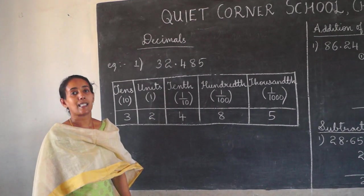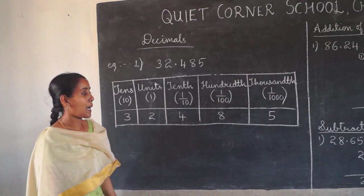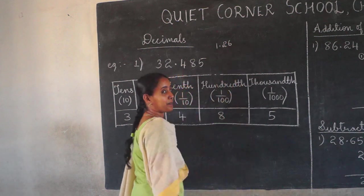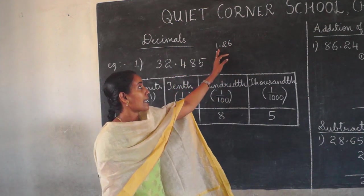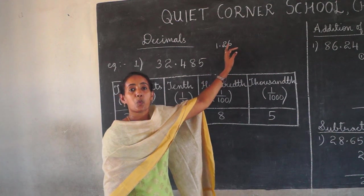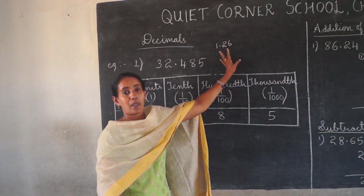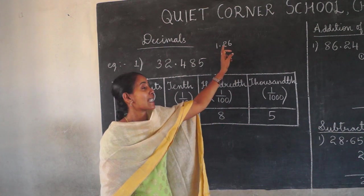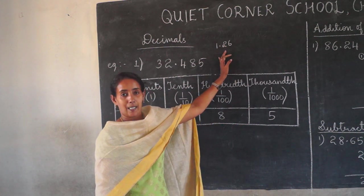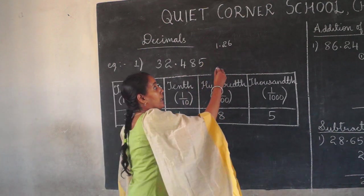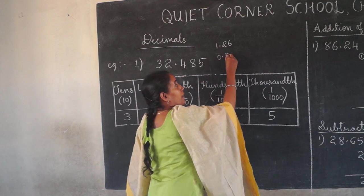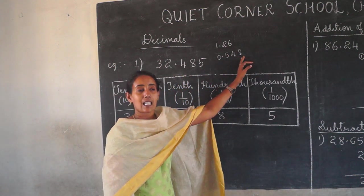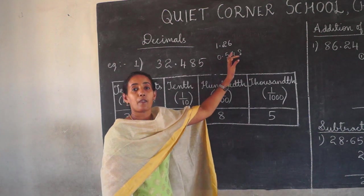How can you read a decimal number? For example, 1.26 — it should be read as 'one point two six', not 'one point twenty-six'. After the decimal point, each and every digit should be mentioned. Next example: 0.548. It is not 'five forty-eight' — it is 'zero point five four eight'.